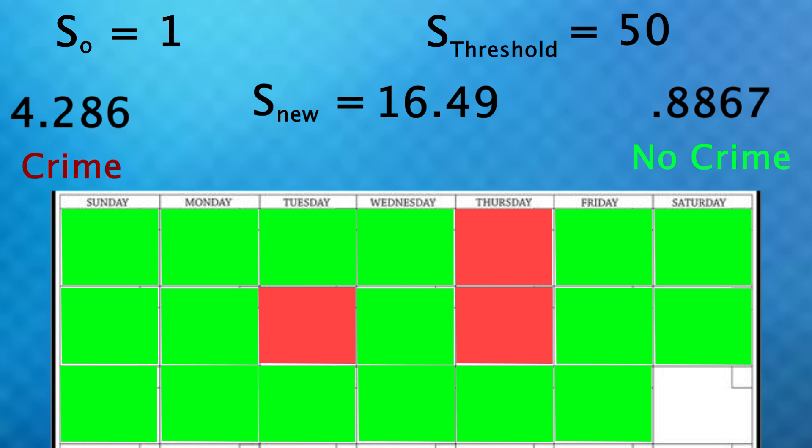So, if the next day a crime is committed, that takes our s value above the threshold, indicating a change point has occurred. Note, this does not tell us when it happened, but we just know that it did, as too many crimes occurred during this time interval.